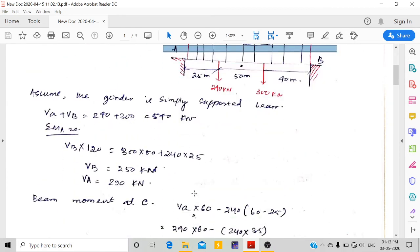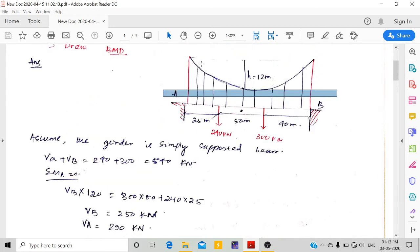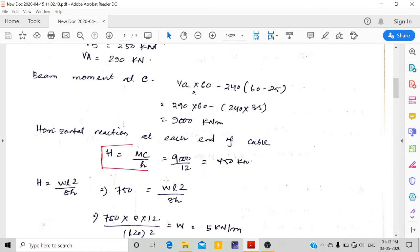Now to calculate the horizontal reaction at this point, which we will use to calculate T_max. This formula is derived: H equals M_c divided by h, where h is the central dip. So H is 750 kN.